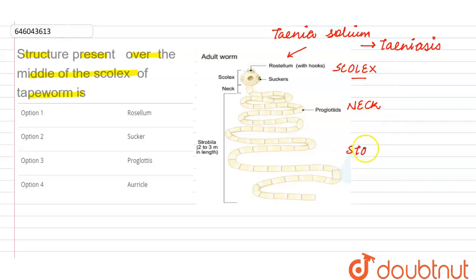Then the neck and then the strobila. The strobila part has got further the proglottids.